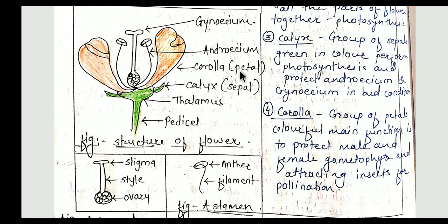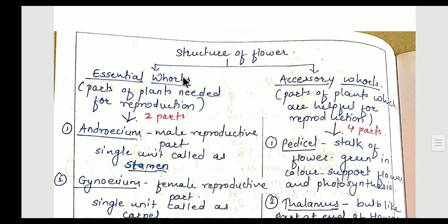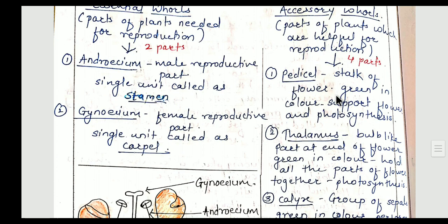The last part of the accessory whorl is corolla. The single unit of corolla is called a petal, which is colorful, and the group of petals is called corolla. As it is colorful, the main function is to attract insects for pollination. It also protects the androecium and gynoecium since they are present inside the petals.